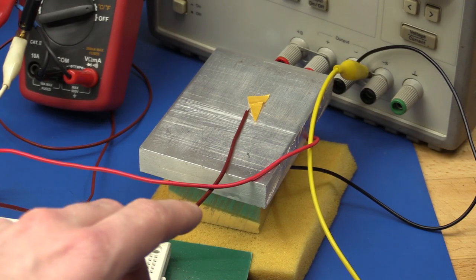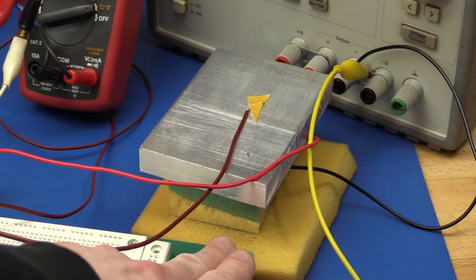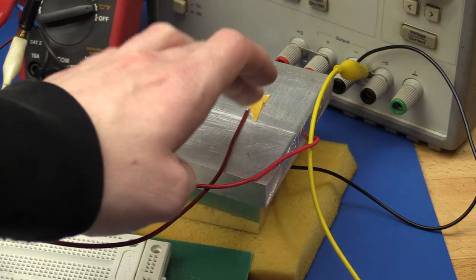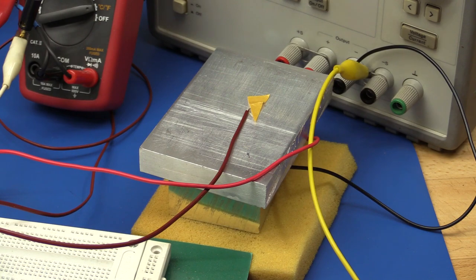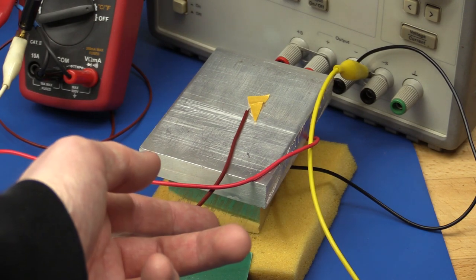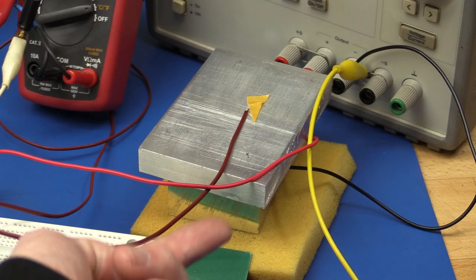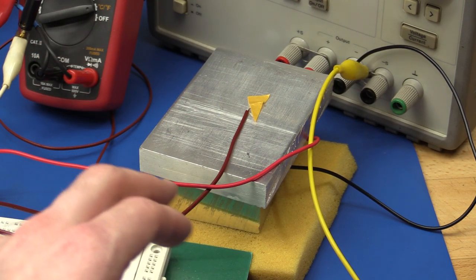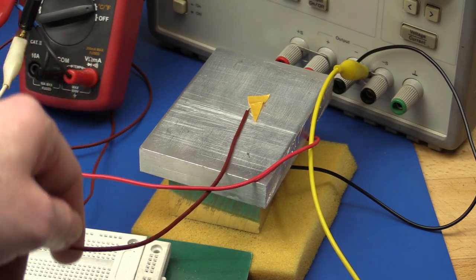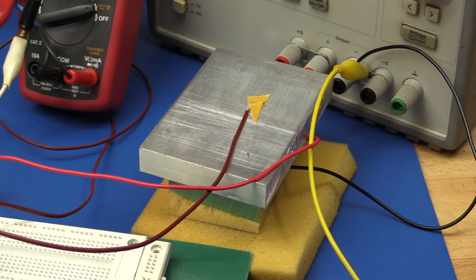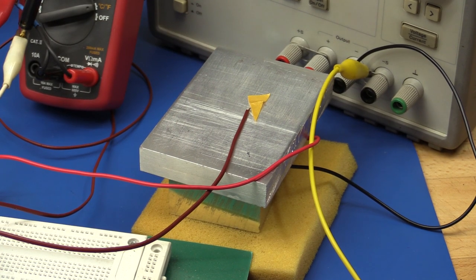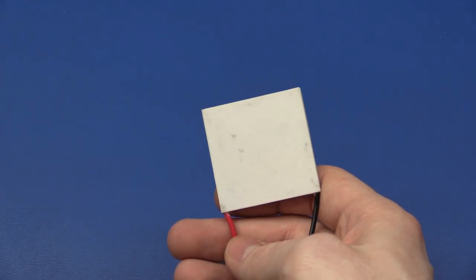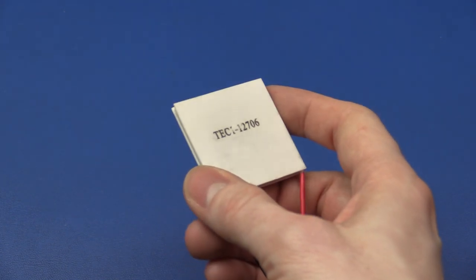When you have energy passing through it from this bottom block to the top block. So in other words the element will generate a current when energy is passing through it, and when you apply a current it will transfer energy through itself. So at least I think they are pretty cool devices these Peltier elements.